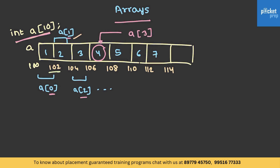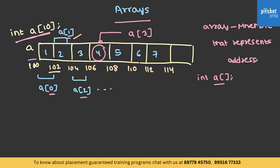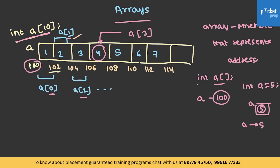Before proceeding with arrays, I want you to understand one thing: the array name is generally a mnemonic which represents its address. If an array was declared and starts at a memory location of 100, then A actually represents 100. For a normal variable A assigned a value of 5, A represents 5. But if it's an array, it actually holds its base address. As this array starts from location 100, the name of the array represents the start address, which is 100.